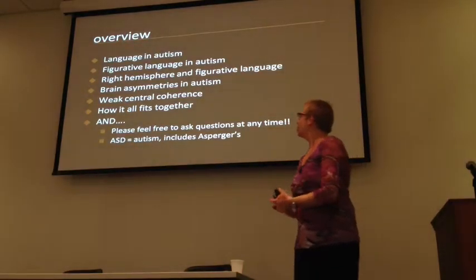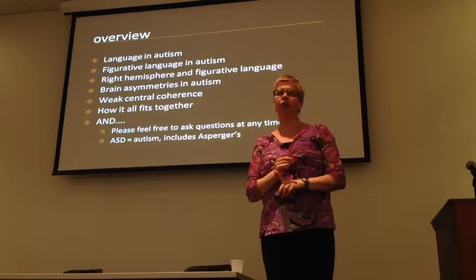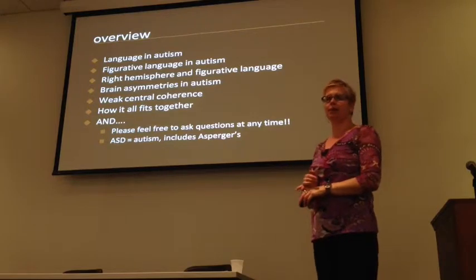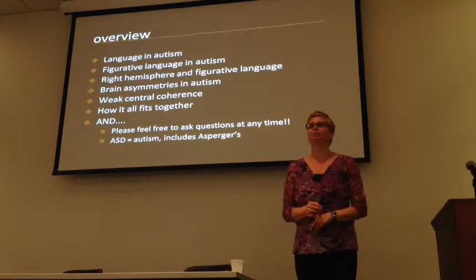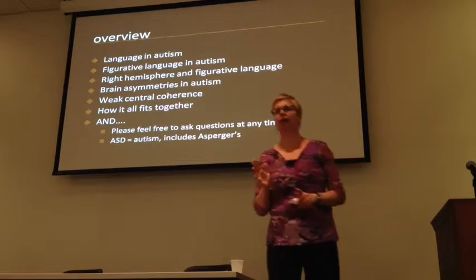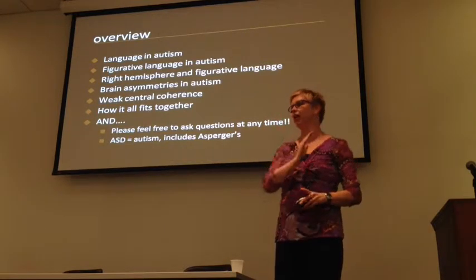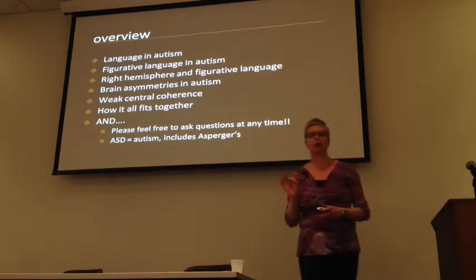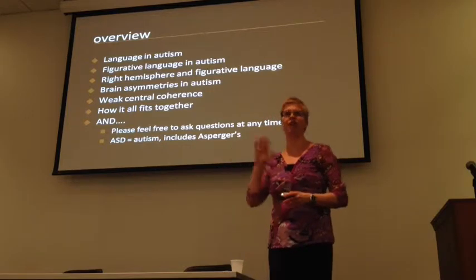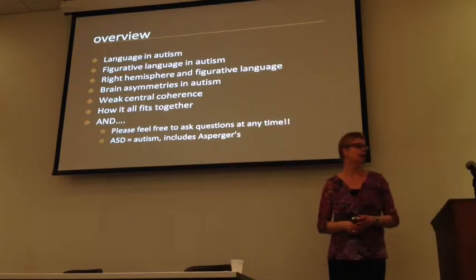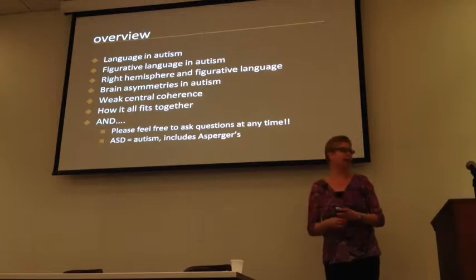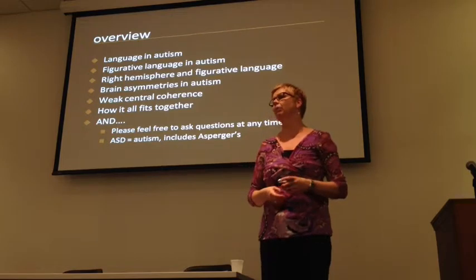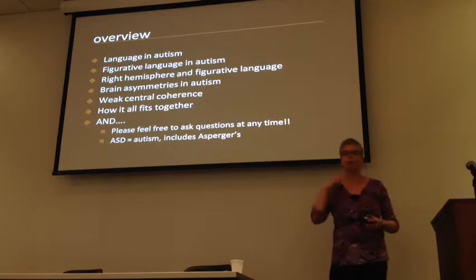What I'm going to be talking about today is some general characteristics of language in autism, and then figurative language — what that is and how it relates to autism. Then I'll talk about lateralization and the left versus right hemisphere dichotomy in autism, linking that to a theory called weak central coherence, which is a cognitive theory about how people with autism organize their reality and their world. Then I'll pull it all together — what can we learn about how the autistic mind works.